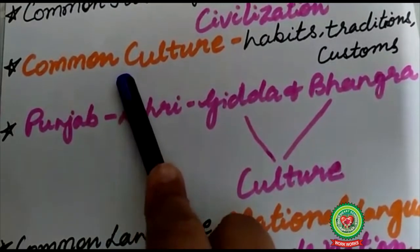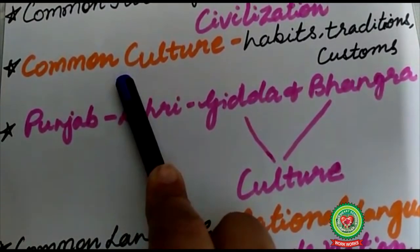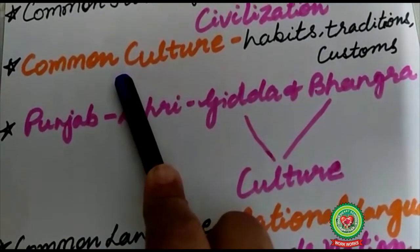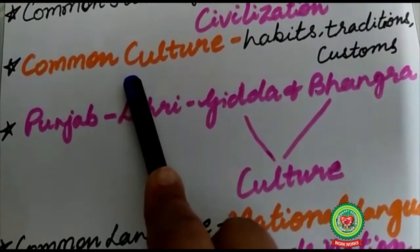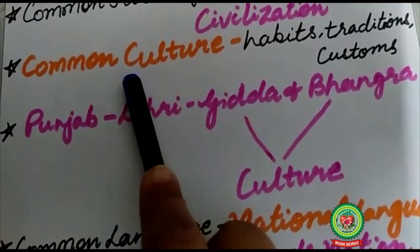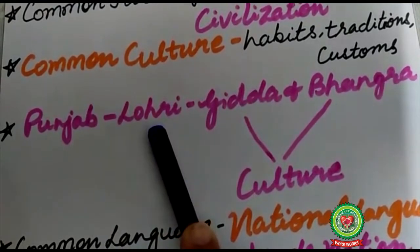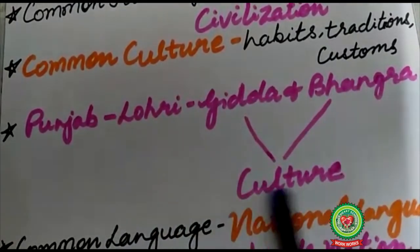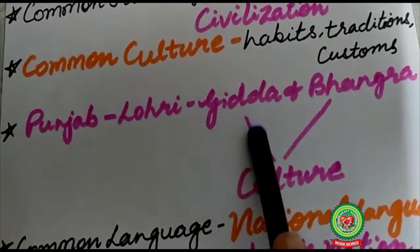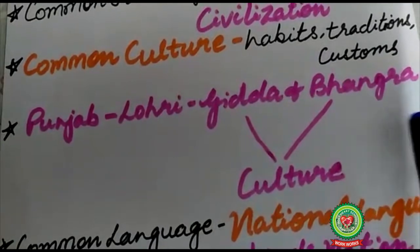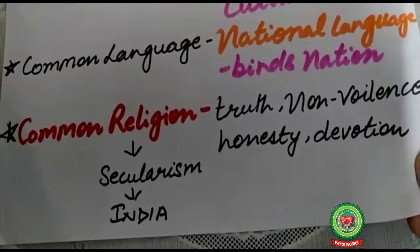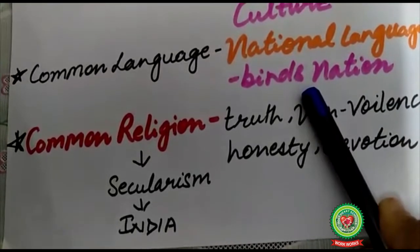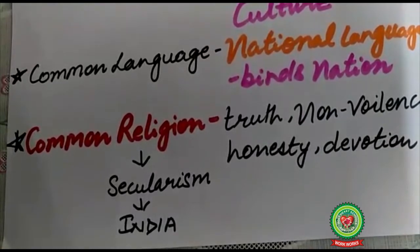The next factor is common culture. Culture means the habits, traditions, and customs of the people, transmitted from one generation to another. It generates a sense of pride and collectiveness. For example, in Punjab we celebrate the festival of Lohri, and boys and girls like to perform dances like Giddha and Bhangra. This is the culture of Punjab — it ties the people together and shows their collectiveness, generating a sense of pride.